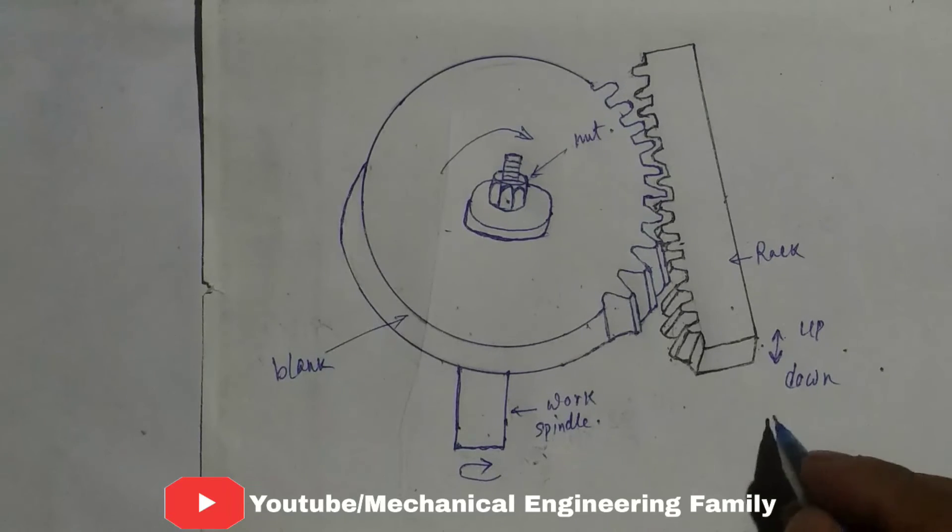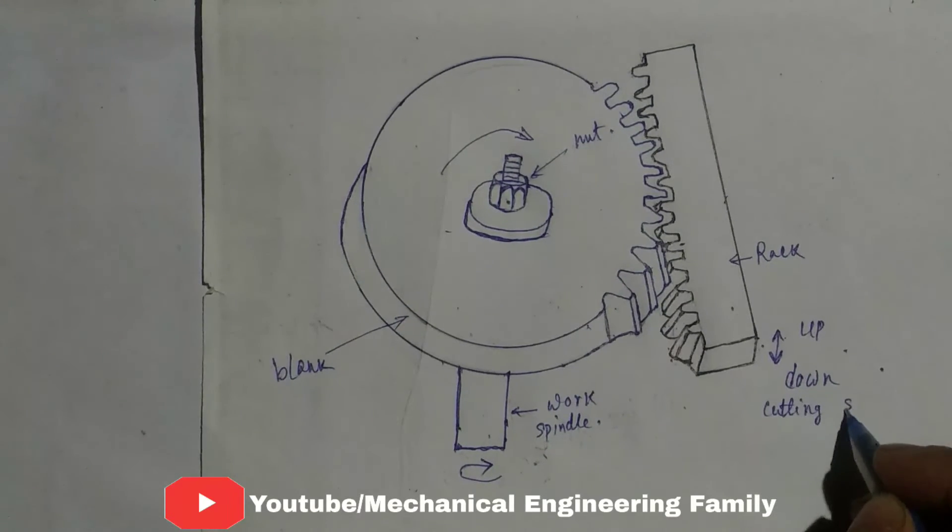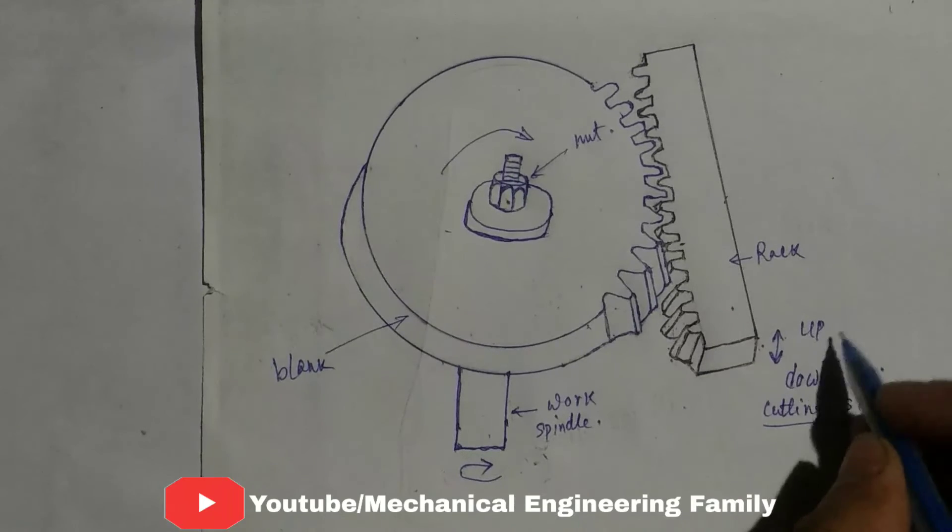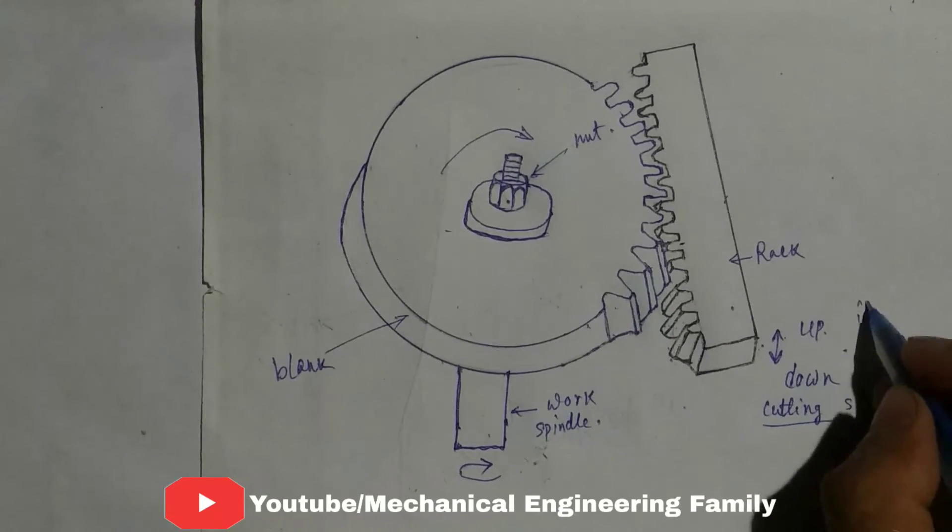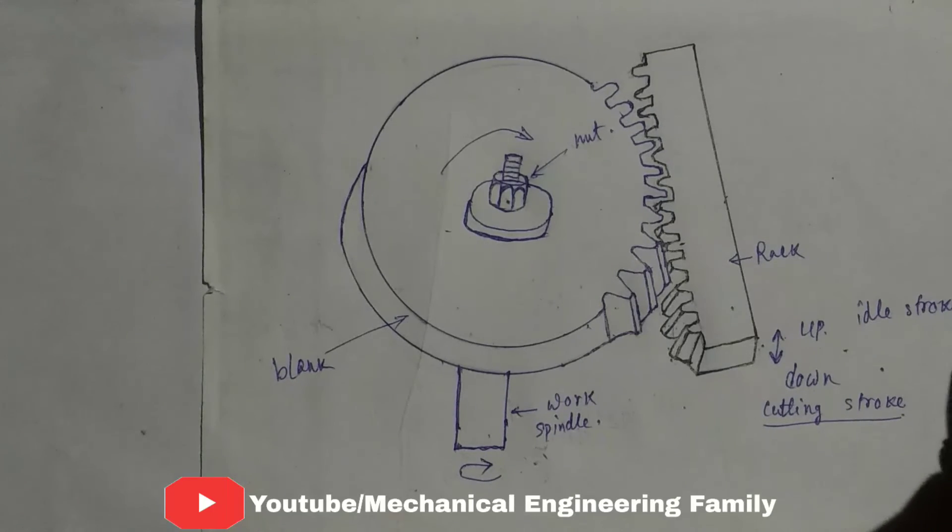Here the down stroke is the cutting stroke, and the up stroke is the idle stroke.